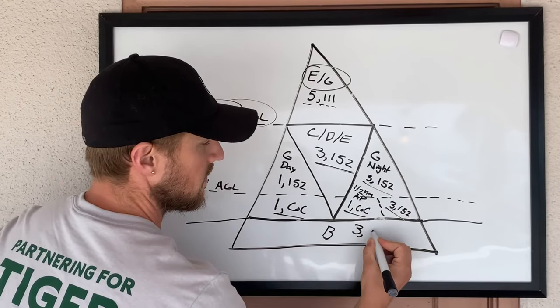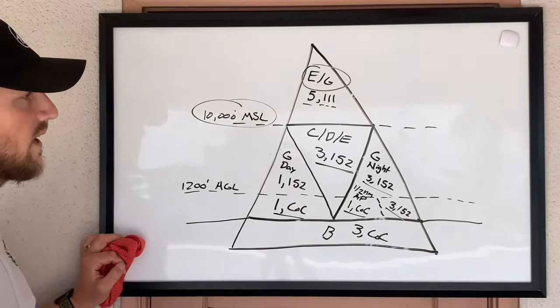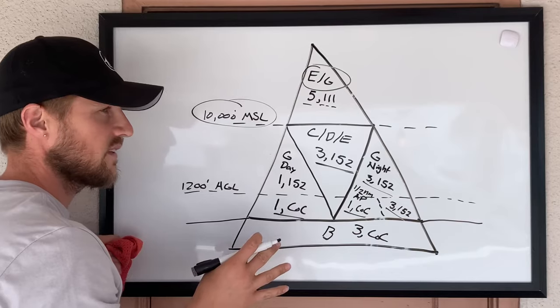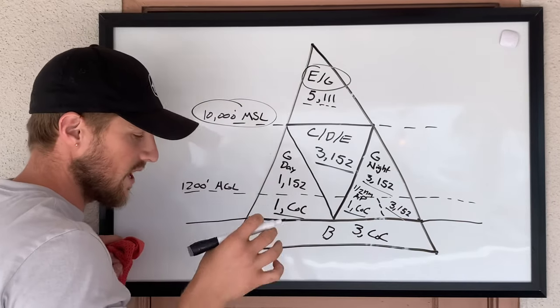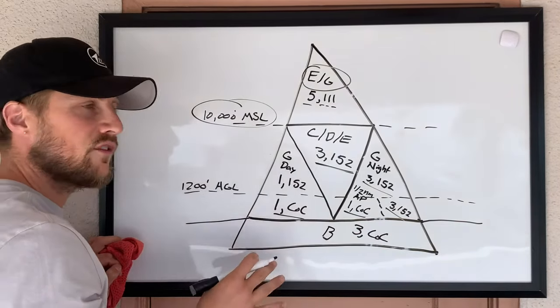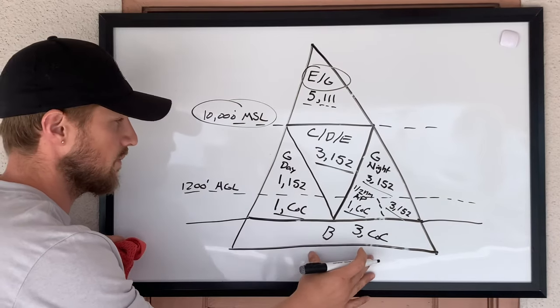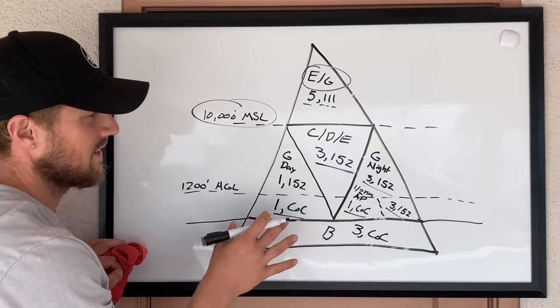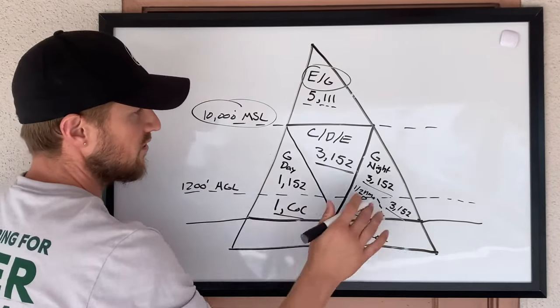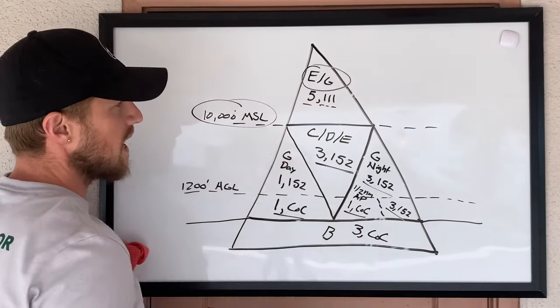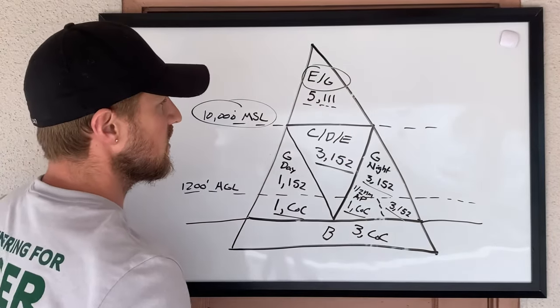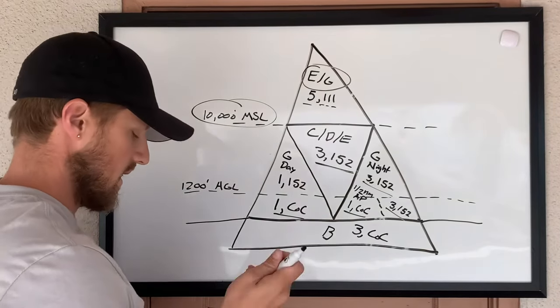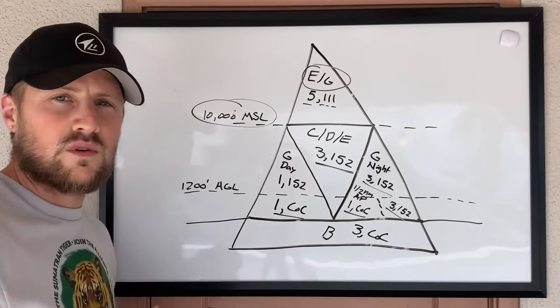That's how you draw your triangle. If you memorize how to draw this enough so that you can see it in your head, the first thing you can do when you sit down for your FAA written is you can take a scrap piece of paper, you can draw this out, and now you basically have notes to reference throughout your test. You draw your triangle, you draw your sections, and then you start from the top and you draw the airspace designation, the visibility, and the cloud clearance. It takes some practice but it's very worth it.